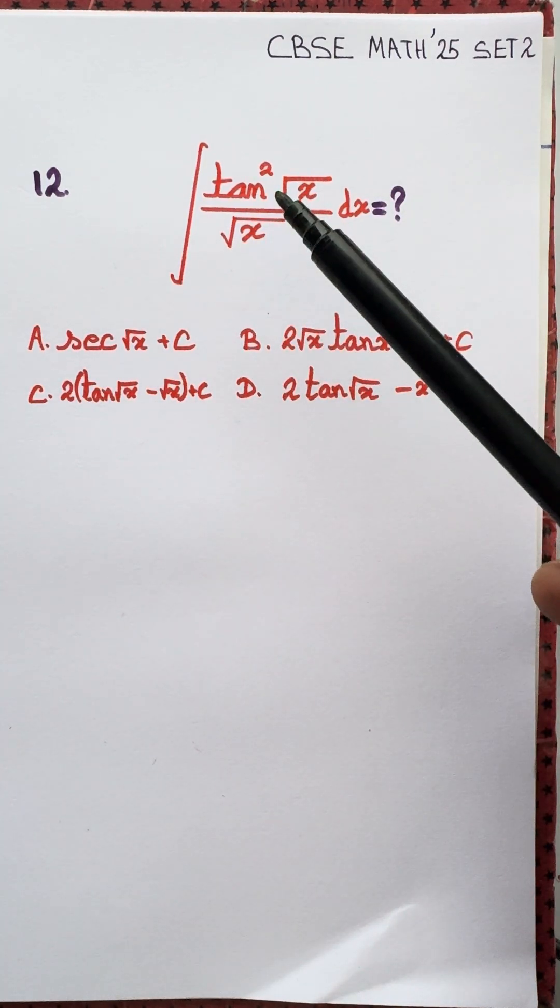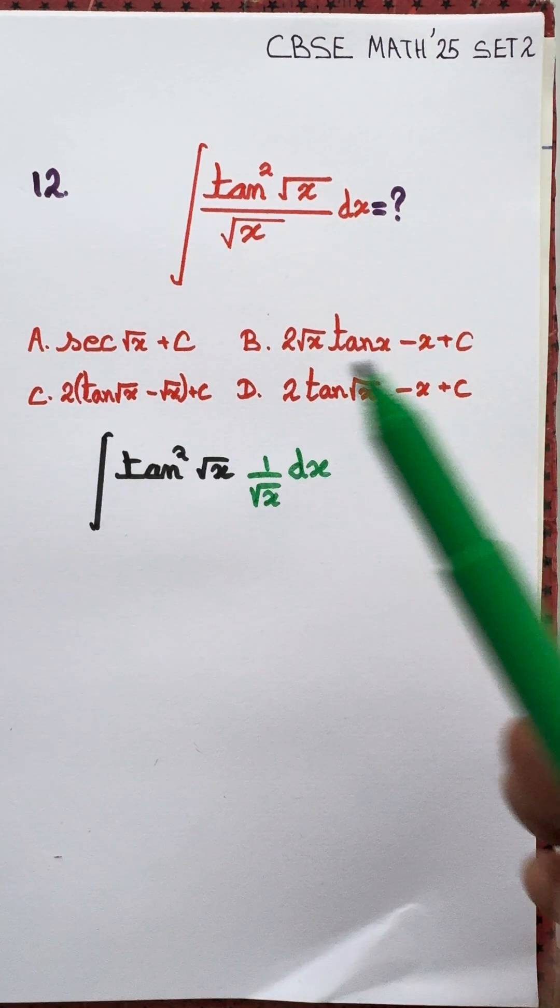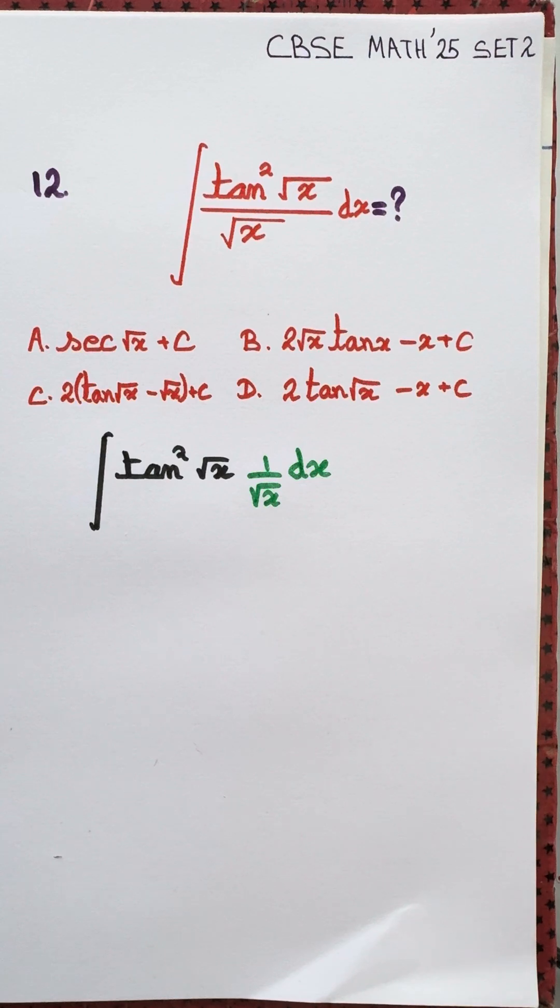Integral of tan squared root x by root x. Which of the options is correct?